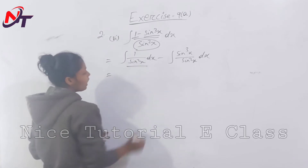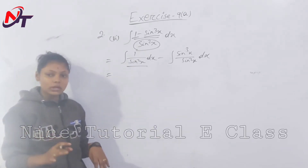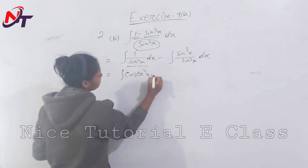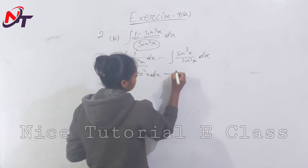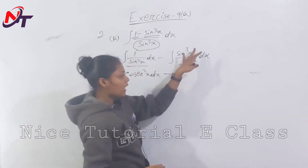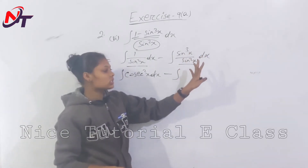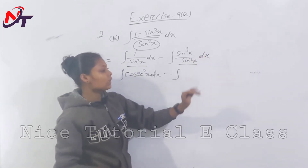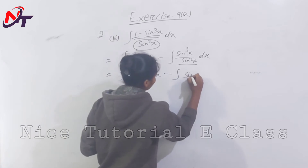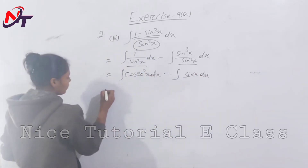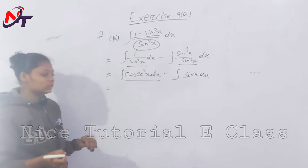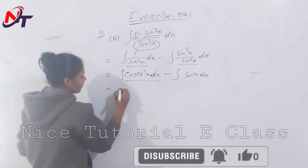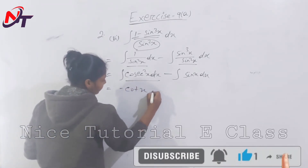So we get integration of 1 by sin square x dx minus integration of sin square x by sin square x dx. That gives integration of cosec square x dx minus integration of 1 dx.